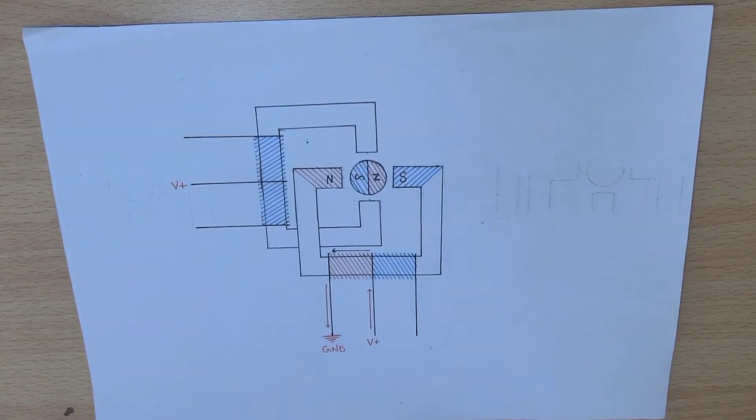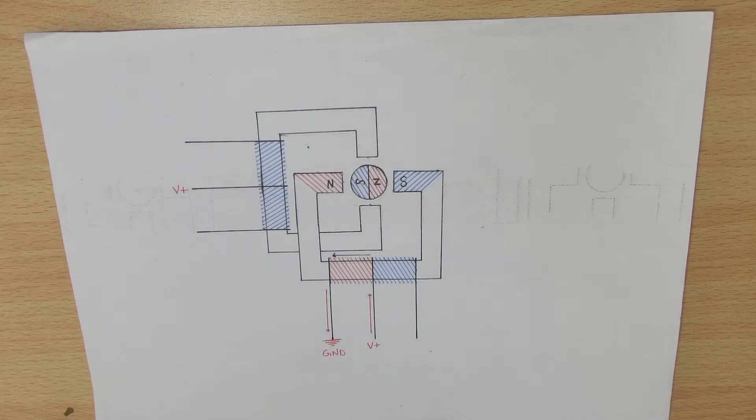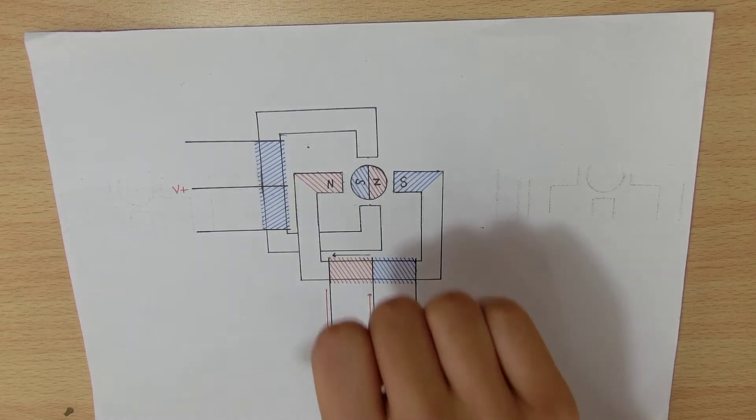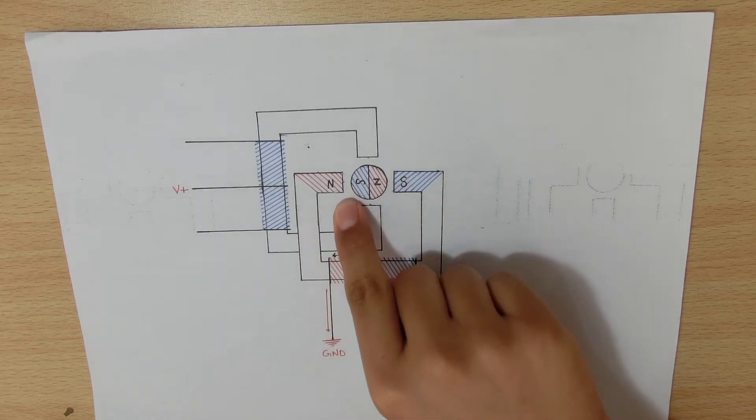Now let's see how unipolar stepper motor works. Firstly, we attach both common wires to the positive rail of our power supply. Then we attach B1 to ground. We can see using the right hand rule that the magnetic fields create a north pole here and a south pole here.